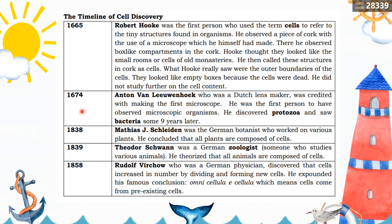In 1674, Anton van Leeuwenhoek, a Dutch lens maker, was credited with making the first microscope. He was the first person to have observed microscopic organisms — he discovered Protozoa and saw bacteria some nine years later. In 1838, Matthias J. Schleiden, a German botanist, concluded that all plants are composed of cells. In 1839, Theodor Swann, a German zoologist, theorized that all animals are composed of cells. Lastly, in 1858, Rudolf Virchow discovered that cells increase in number by dividing and forming new cells, and expounded his famous conclusion: 'Omnis cellula e cellula,' meaning cells come from pre-existing cells.